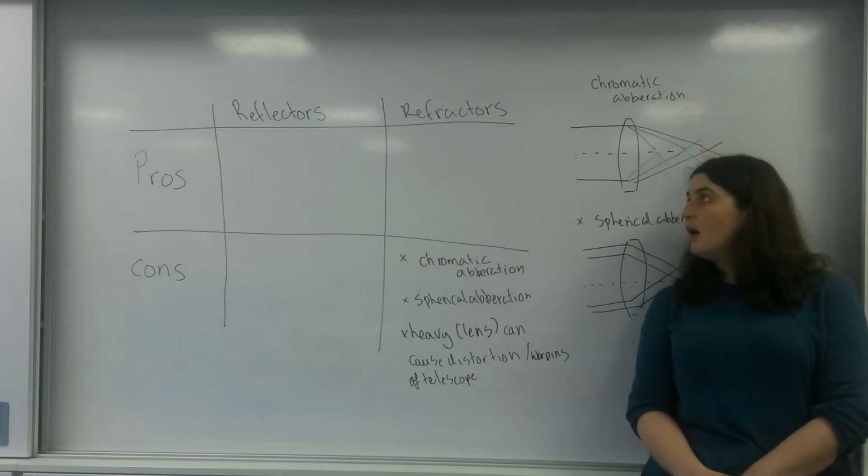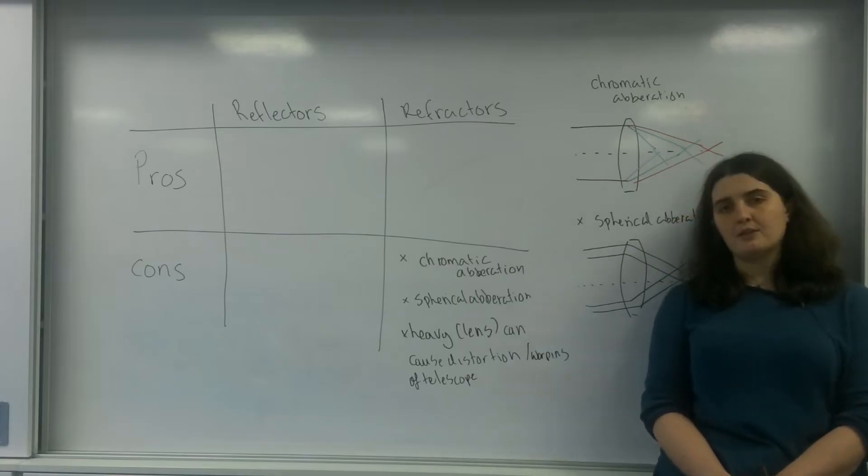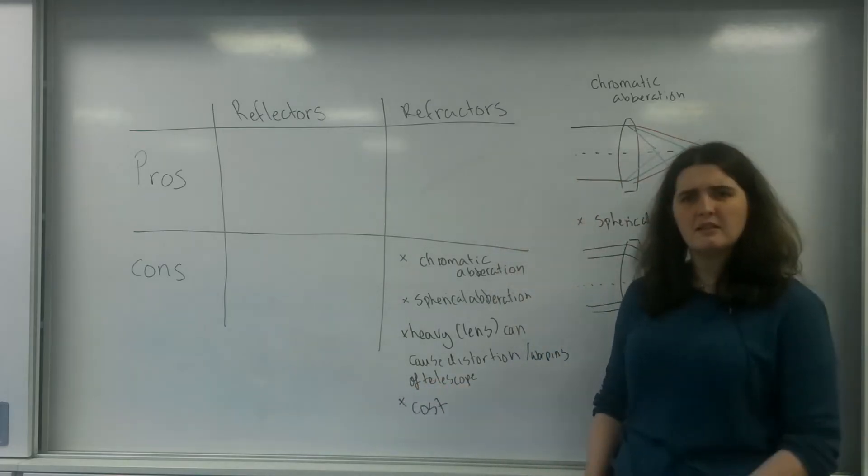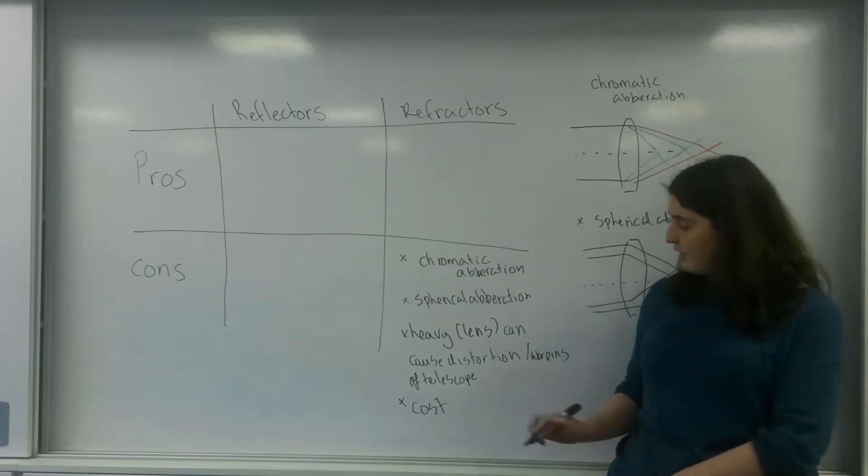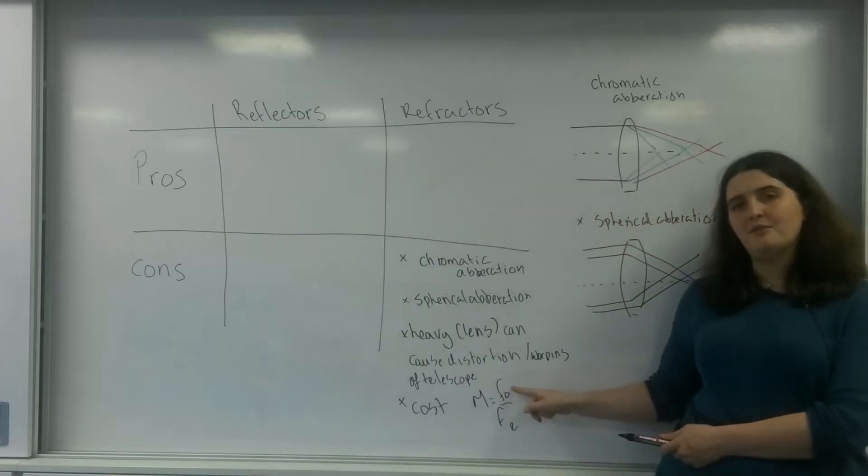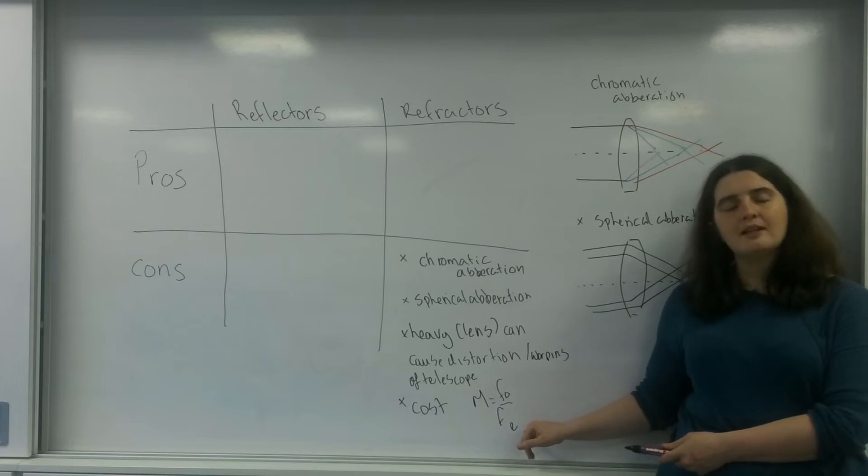The last thing, a refractor, one of the problems with refractors of course is the cost. They're expensive. Two massive pieces of glass. To actually get a decent magnification, you either want a massive objective focal length or a very, very small eyepiece focal length. Both of these have their problems.